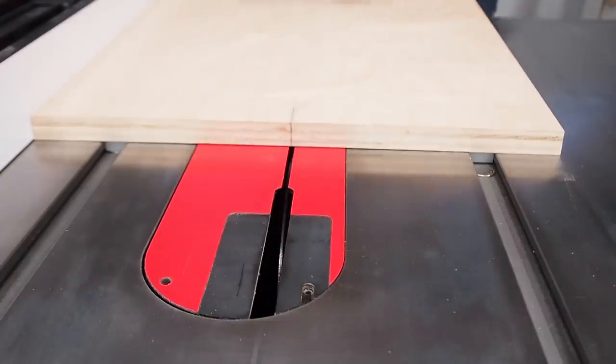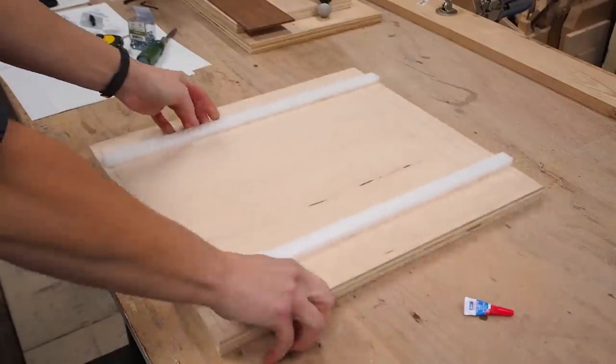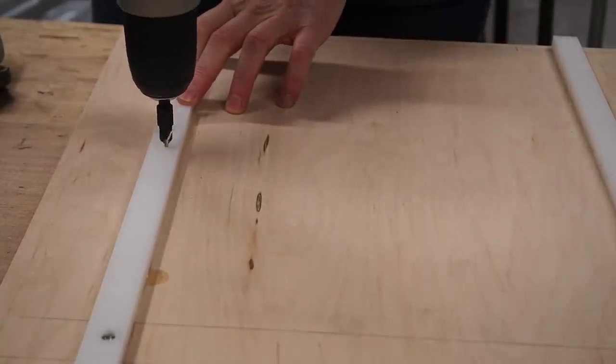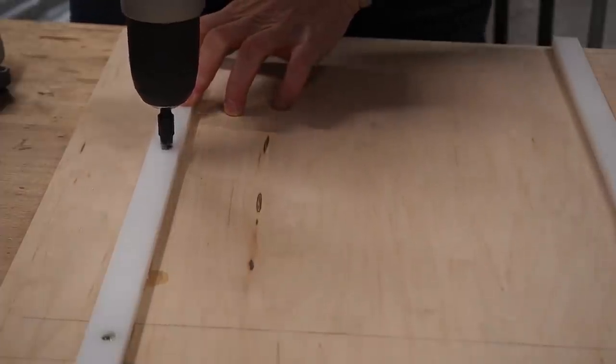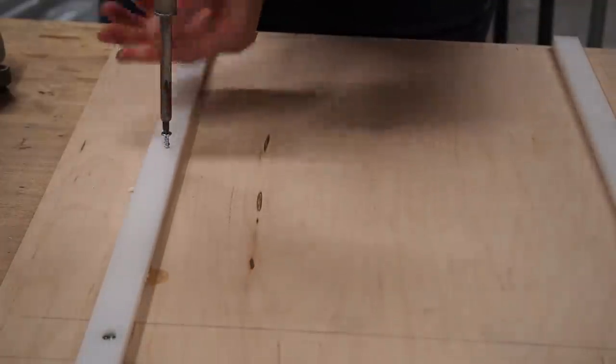With the runners temporarily attached I was then able to flip over the board to drill some countersunk holes to permanently attach them with some screws. And I made sure to screw these in by hand so I wouldn't split anything.